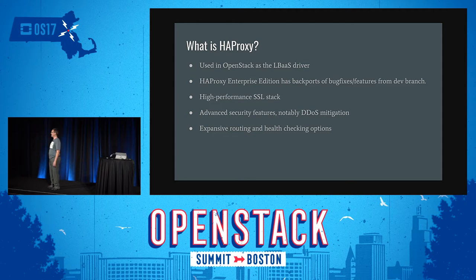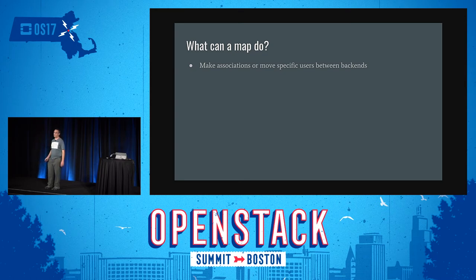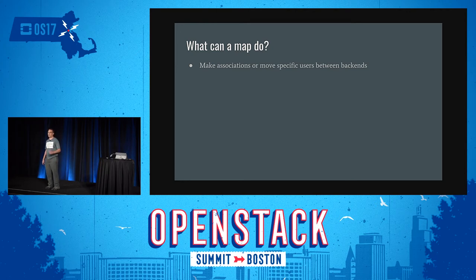The first thing you would want to be able to do with a map is move certain users to certain backends. This is a little bit more of an advanced use of a map, but with the HTTP request set-map option, you can have your backend set a header on a response which moves your client to a higher priority backend. You could have it look at cookie values to determine whether a specific client should be considered a higher priority or moved to a members-area backend versus a normal backend.